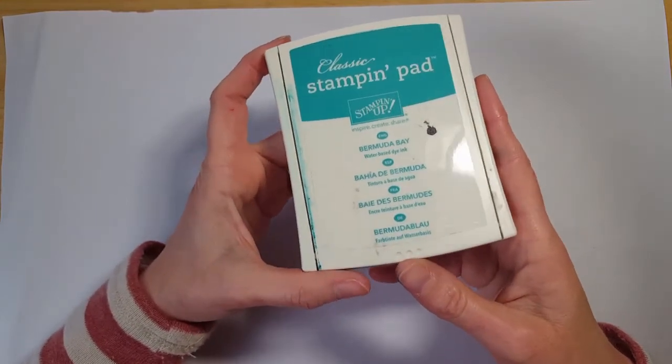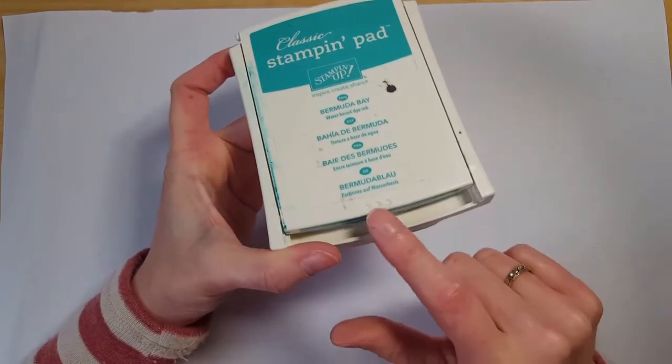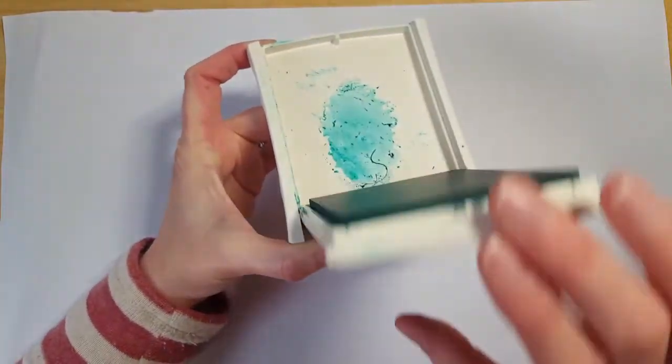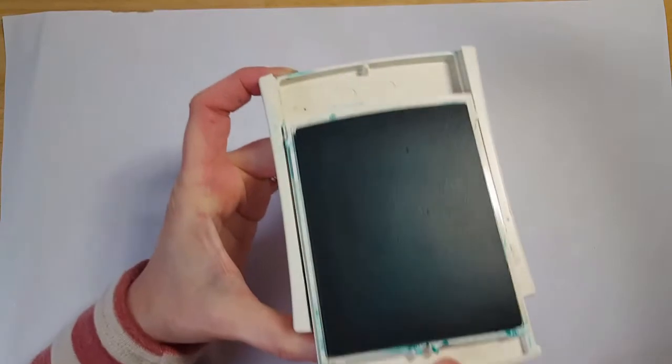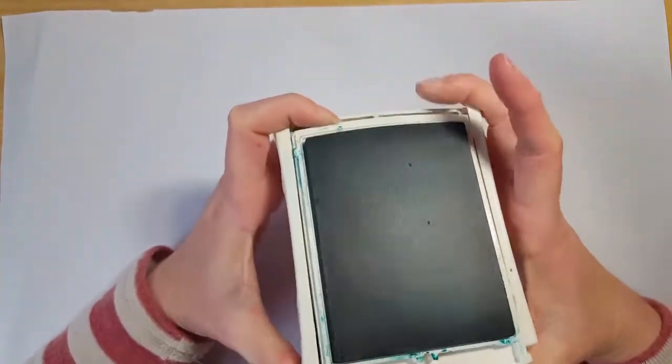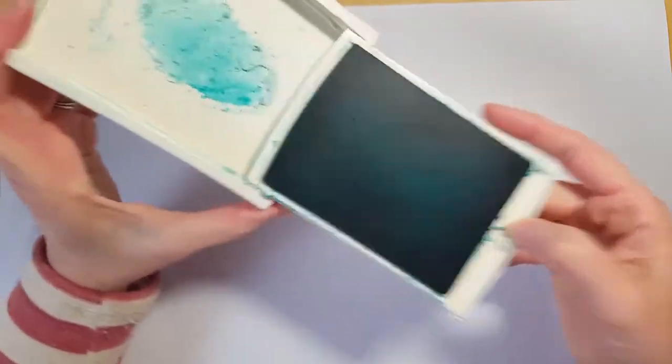So she told us that opening an ink pad was like dating a man. So first thing you want to do is you're going to push them away from you. So you push away right where those three dots are. Then you pull them towards you, and then you lock them down.